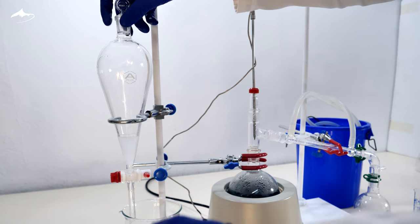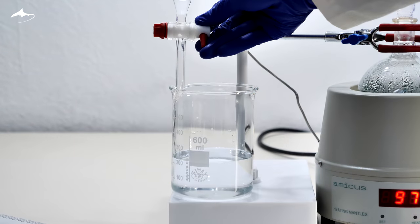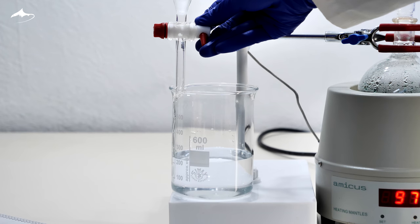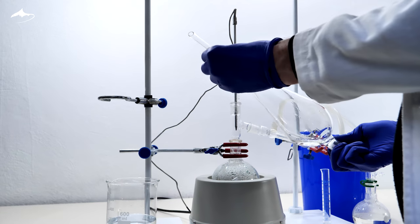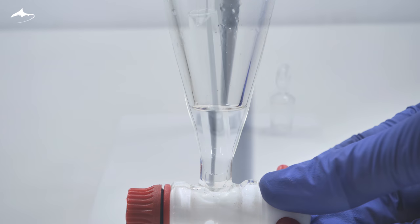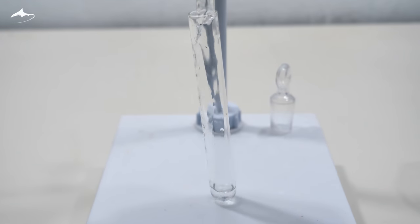Then, and same as before, it is allowed to separate and the aqueous phase is decanted and added to the previous fraction. This is repeated two more times. Once done, the organic phase is collected in a test tube to get an idea of how much yield was lost.